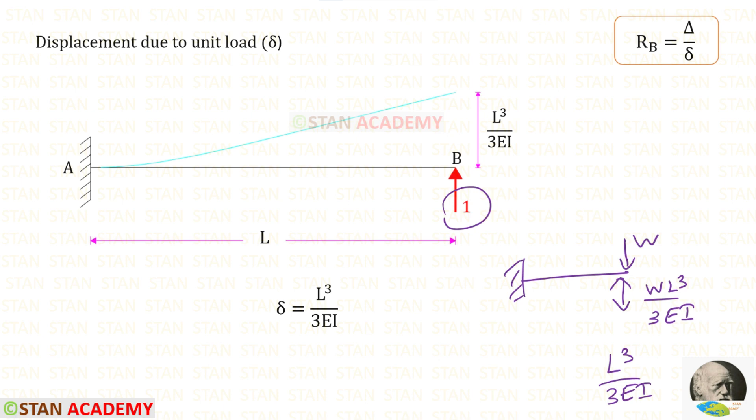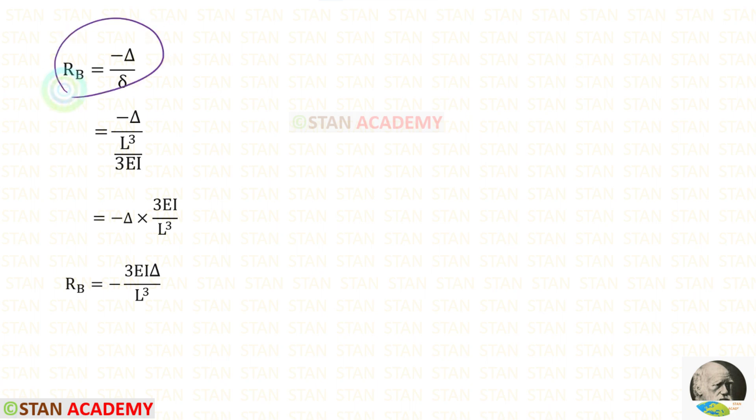Here the deflection occurs upwards, so delta should be taken as positive. In this formula let us apply the value of delta. In this way for rb we will get minus 3 ei delta upon l cube. We have got a negative value, which means our assumption is incorrect. We assumed that rb would be acting upwards, but actually it is acting downwards.